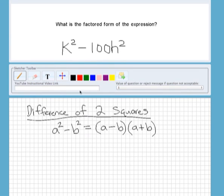So here I've written out the equation to factor a perfect square. I'm going to write out the problem that you sent in here: k squared minus 100h squared.